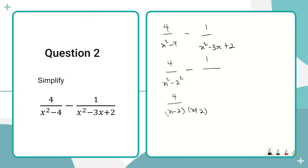On the other side we have 1 all over x squared minus 3x plus 2. This is a quadratic, and for quadratics we can use the factoring method — we look for two numbers that when multiplied give us 2, and when added give us negative 3. In this case, you can use the calculator to find the factors quickly.